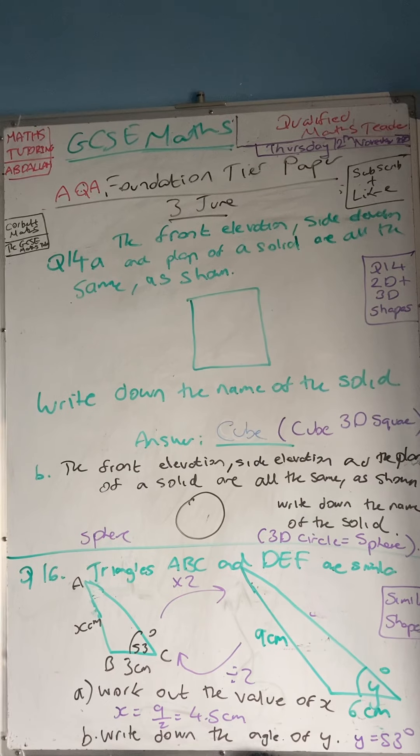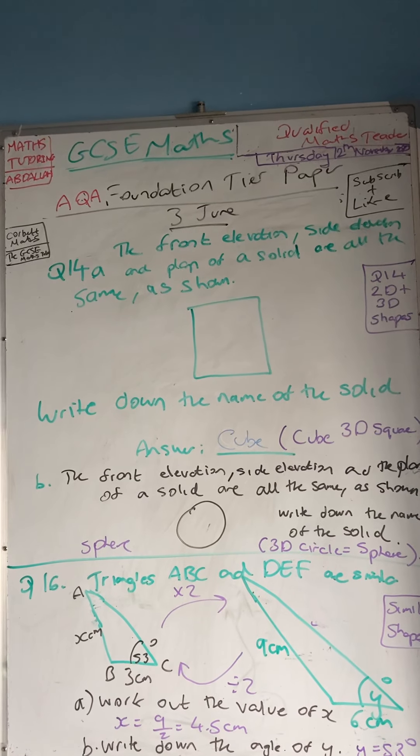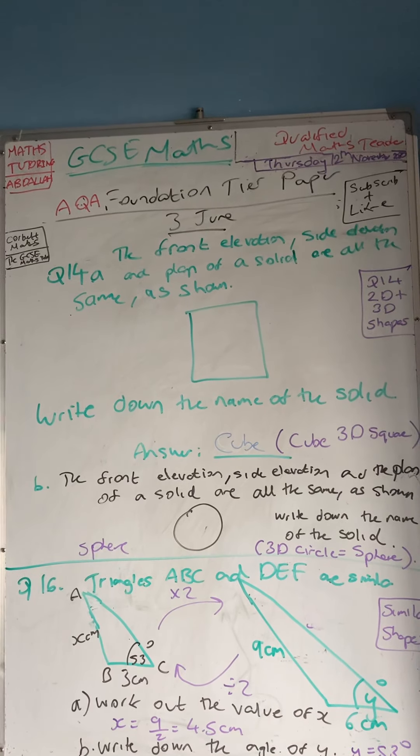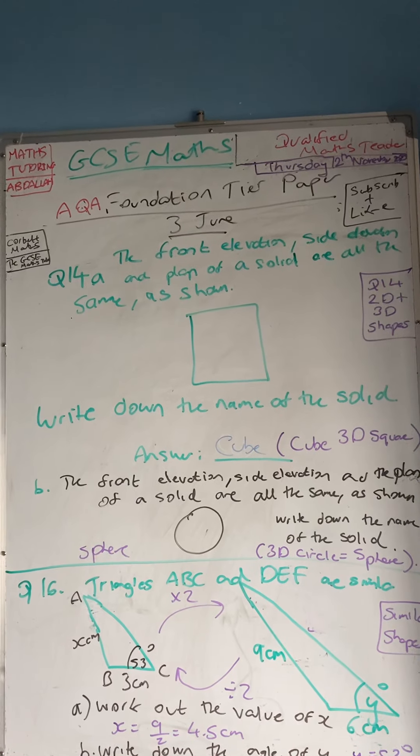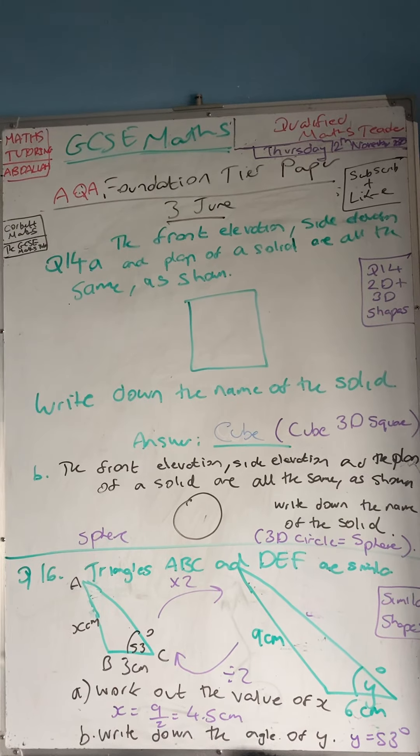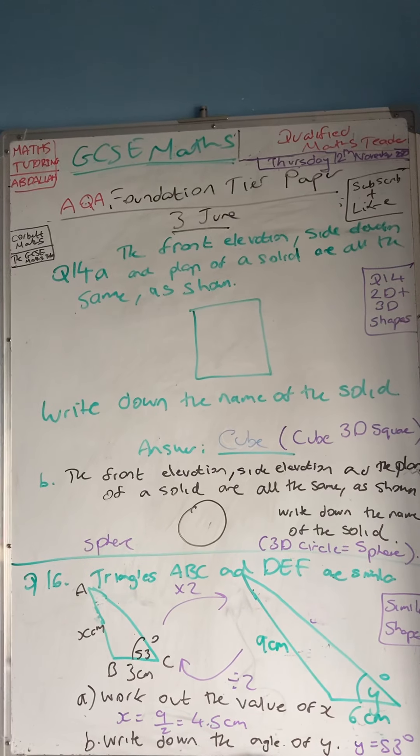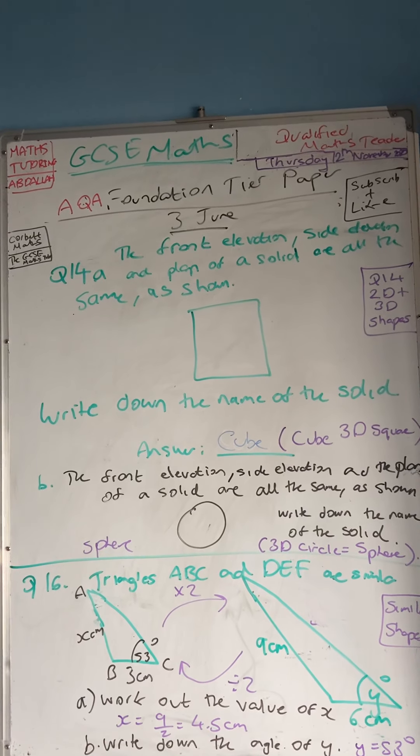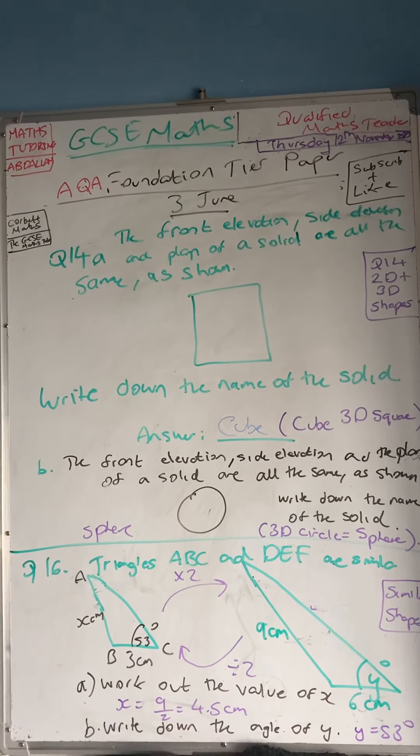Part B is the same question but we are given a circle. The front elevation, side elevation and plan of the solid are all the same as shown. Write down the name of the solid. So it's going to be a sphere. A sphere is a 3D circle.